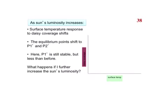So as the sun's luminosity increases, the surface temperature response to daisy coverage shifts. The equilibrium points shift to P1 prime and P2 prime. P1 prime is still stable, but it ends up being a little less stable than before. And let's think about what happens now if we further increase the sun's luminosity.